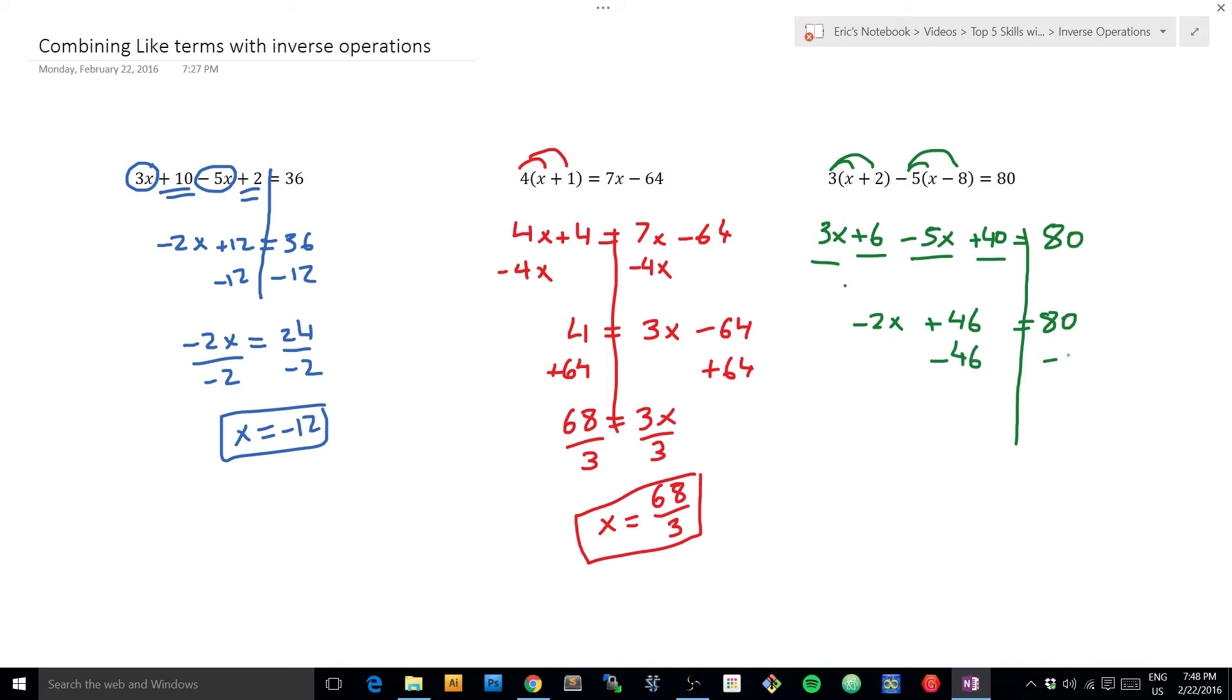So I could say, okay, minus 46, minus 46, that's the outermost layer. This will give me 34. And dividing both sides by negative 2 would tell me that x is negative 17.